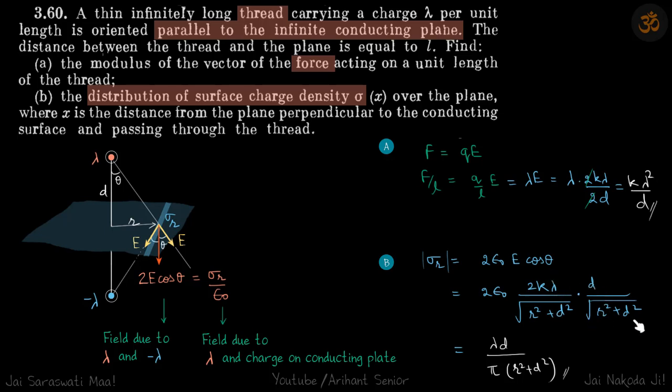Now for the force between the two straight wires - we've done this before, it's a standard method. Force equals q times E, and force per unit length becomes q by l times E. Since q by l is lambda, this becomes lambda times E, and E is 2k lambda by the distance between them, which is 2d. This gives our answer: k lambda squared by d.